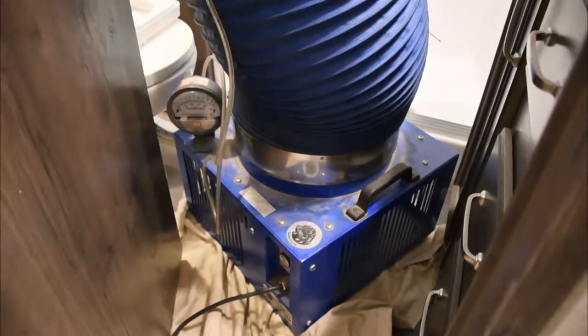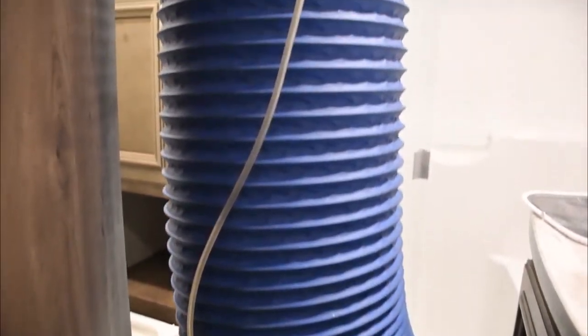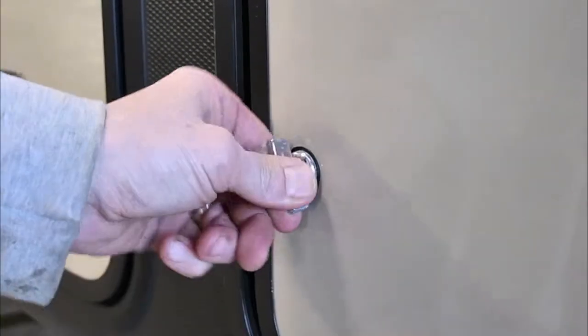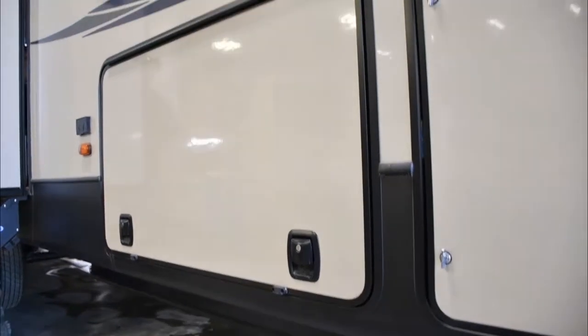A certified RV tech uninstalls a ceiling vent in the RV to hook up a SealTech pressurizing machine. He then closes all the windows, vents, and storage areas to create an airtight seal in the unit.